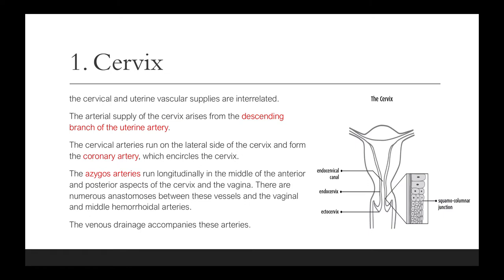The cervical and uterine vascular supplies are interrelated. The arterial supply of the cervix arises from the descending branch of the uterine artery. The cervical arteries run on the lateral side of the cervix and form the coronary artery which encircles the cervix. The azygous arteries run longitudinally in the middle of the anterior and posterior aspects of the cervix and the vagina, with numerous anastomoses between these vessels and the vaginal and middle hemorrhoidal arteries. The venous drainage accompanies these arteries.